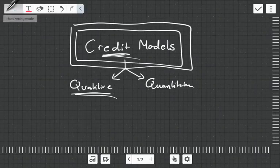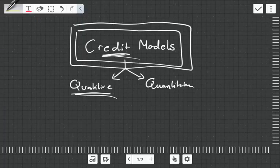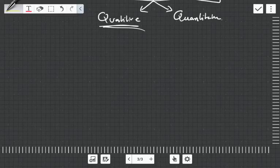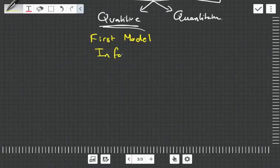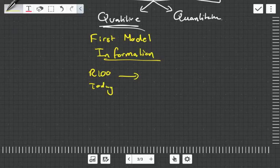So qualitative models for credit risk. A qualitative model is what they used to do back in the day. It's the earliest model that people used and it simply started out as trying to achieve more information about the person before lending their money. Because remember, credit risk is I'm going to give you a hundred rand today and I'm going to hope that you're going to pay me back say 105 rand tomorrow.